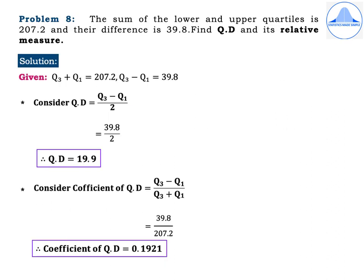Problem 8. The sum of the lower and upper quartiles is 207.2 and their difference is 39.8. Find the quartile deviation and its relative measure. Given Q3 + Q1 = 207.2 and Q3 − Q1 = 39.8. Quartile deviation = (Q3 − Q1) / 2 = 39.8 / 2 = 19.9. Coefficient of quartile deviation = (Q3 − Q1) / (Q3 + Q1) = 39.8 / 207.2, giving 0.1921.